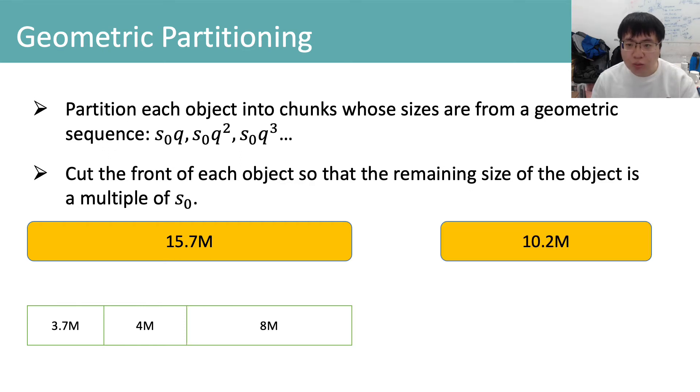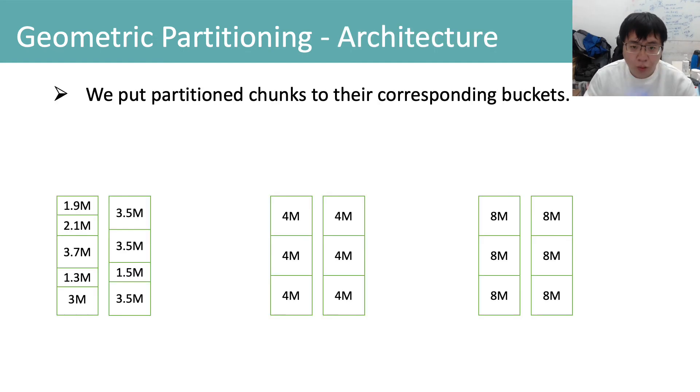For an object whose size is 10.2MB, we cut 2.2MB and partition the object into two 4MB chunks. We put chunks to the corresponding buckets. Each bucket is a file on the disk that contains equal sized chunks.